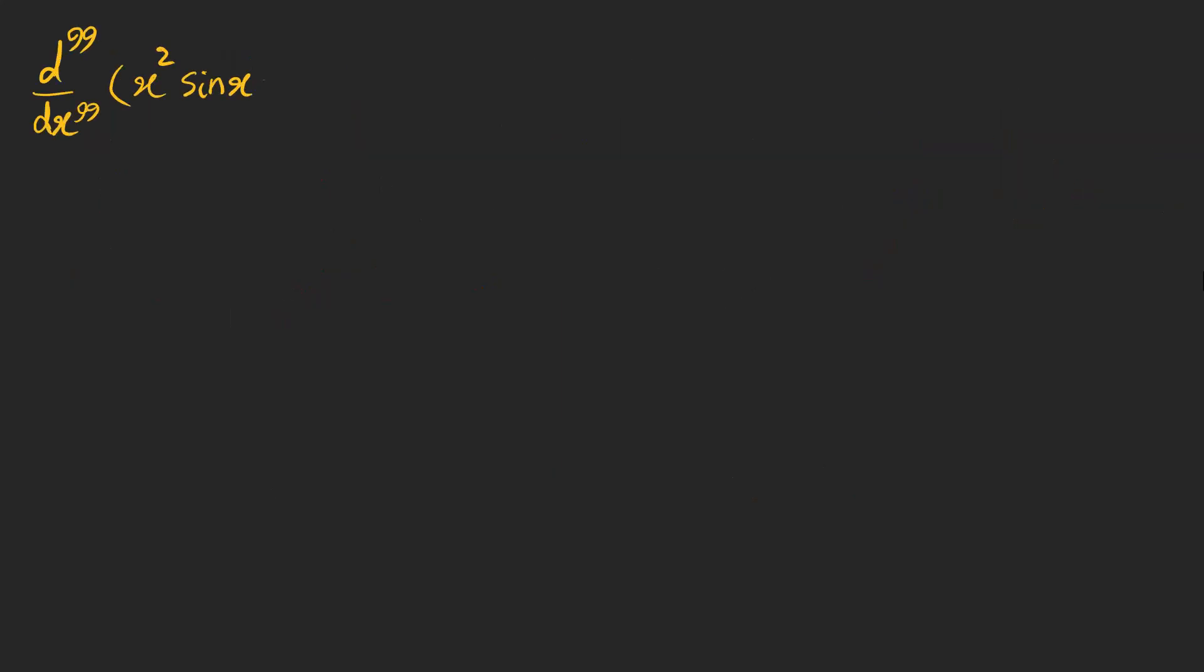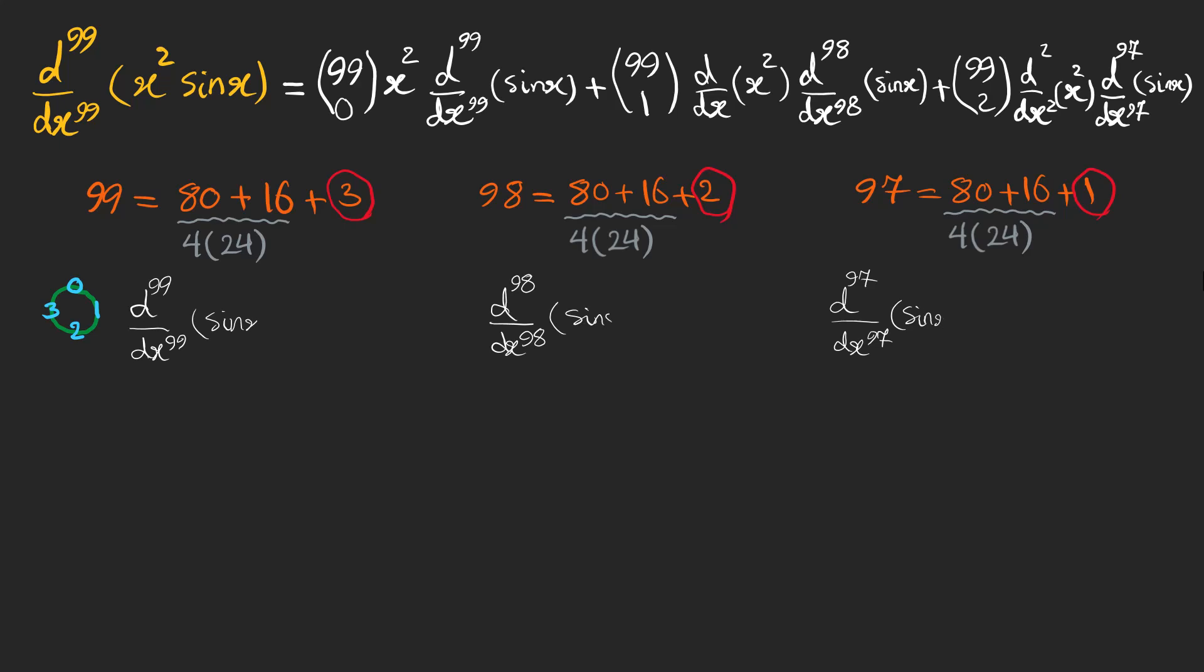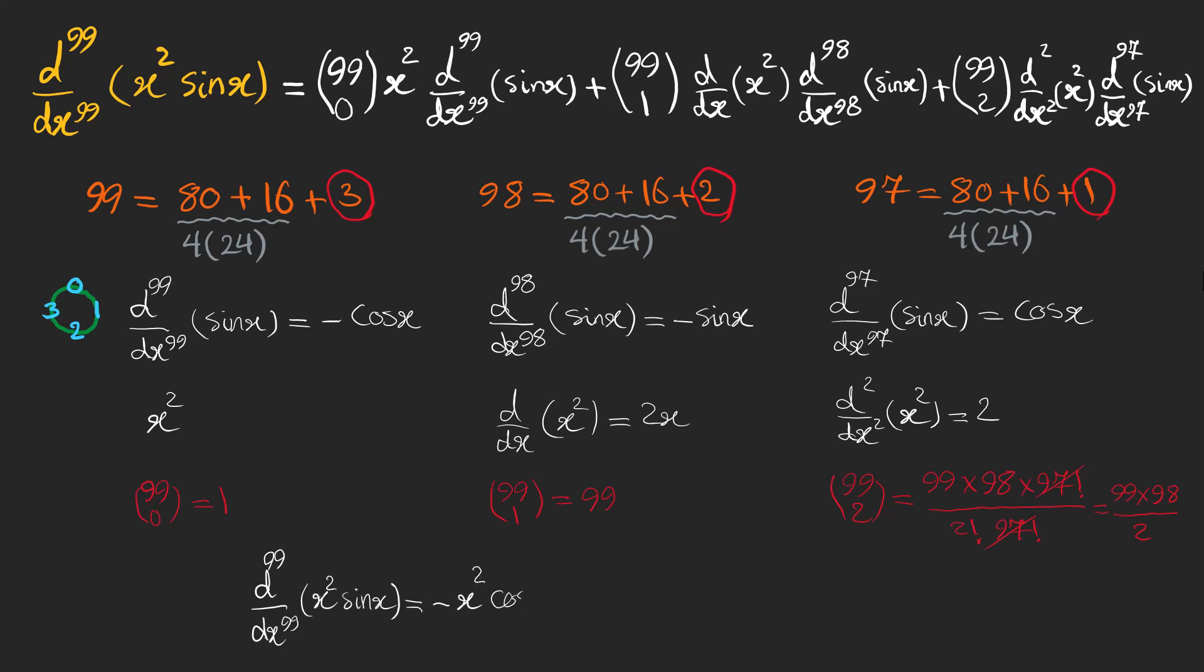Now, let's have some fun and find this one. There are just three terms, and all the others are gone, zero. We have 99, 98, and 97 as our derivative orders, which I like to see as this sum. And the first two terms are divisible by 4, so these numbers are the remainders. And based on the remainders and our trigonometric circle, the derivatives are minus cosine x, minus sine x, and cosine x. We also have x squared and its derivatives. And the combinations as follows. And the final result is something like this.